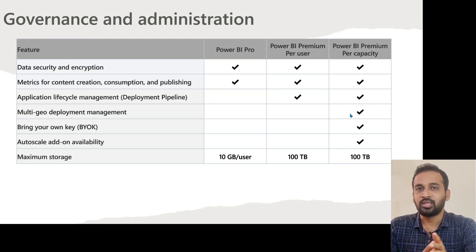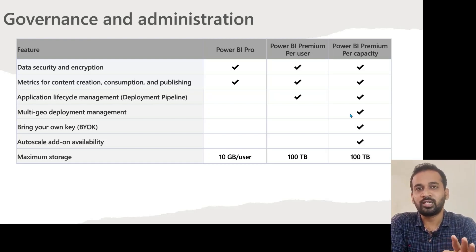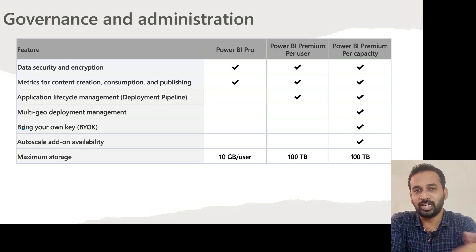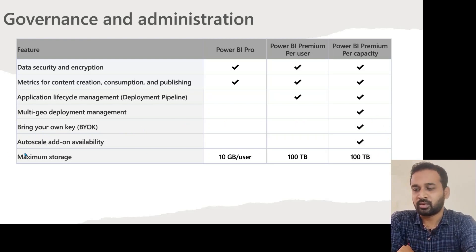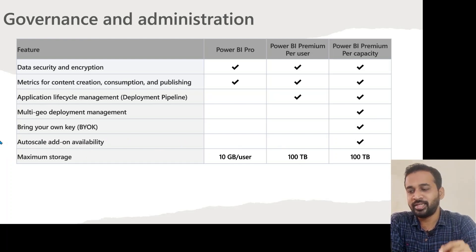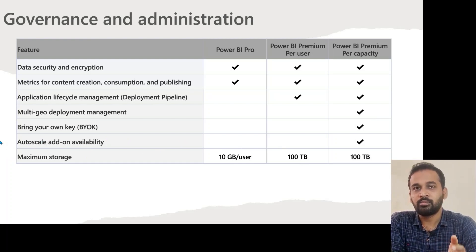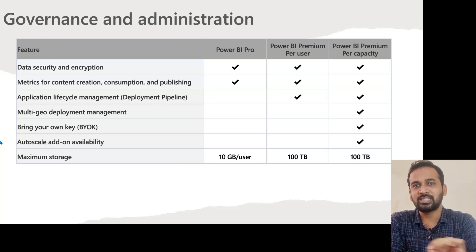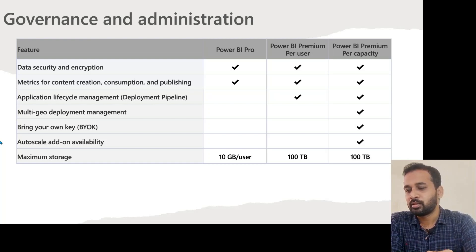The auto-scale add-on is an additional capacity option you can enable. For example, with a P1 SKU, you get 8 cores of CPU and 25 GB of RAM. If you are hitting capacity limits during processing and consumption, you can enable auto-scale. If you enable one or two additional cores, it will charge $85 per 24 hours per core. Note that if it gets activated, it stays active for the full 24 hours — you cannot use it for just one hour — after which it is automatically turned off.